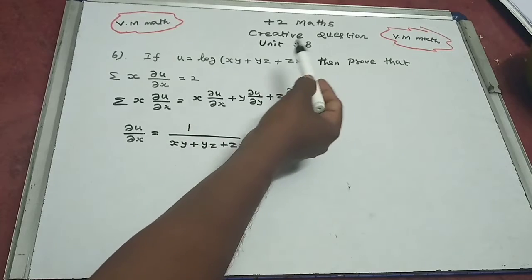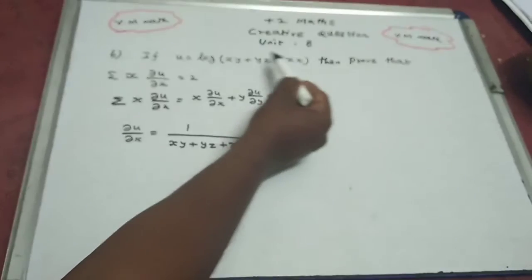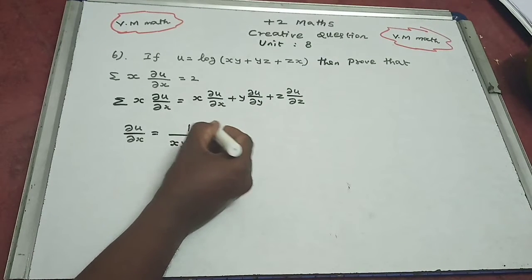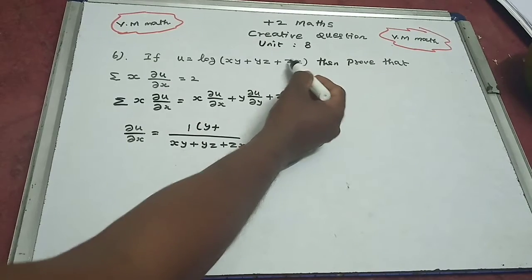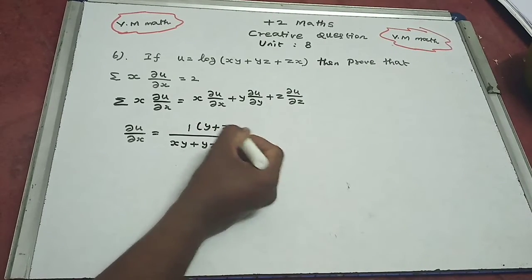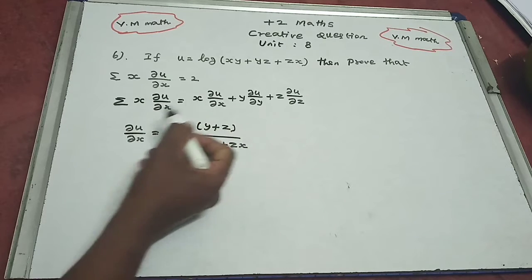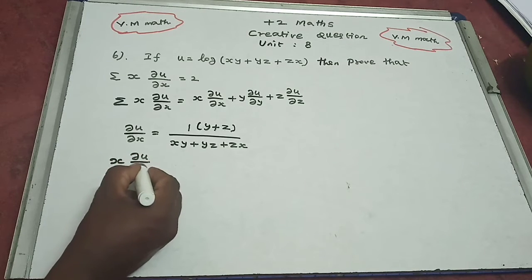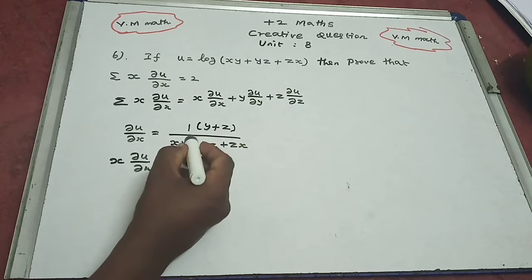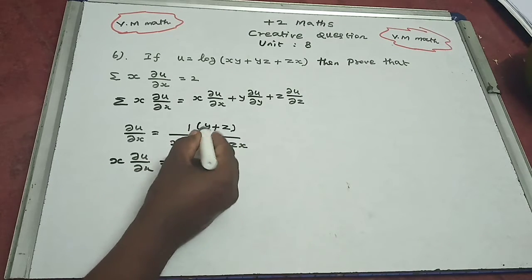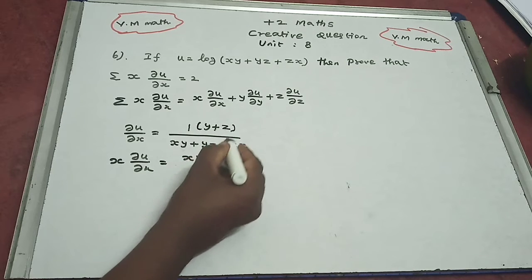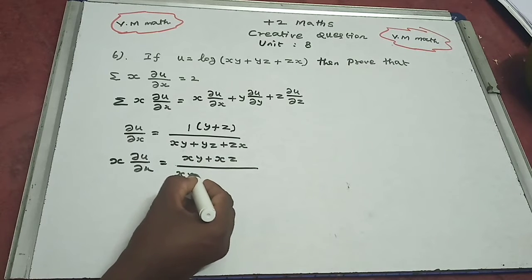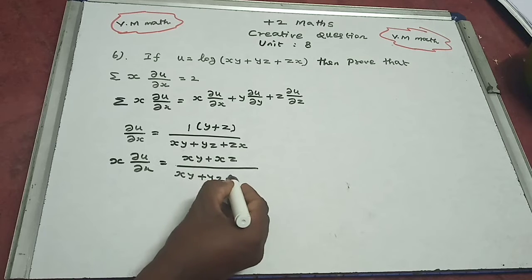The terms containing x are xy and zx. So x into ∂u/∂x equals x(y + z) divided by xy plus yz plus zx.